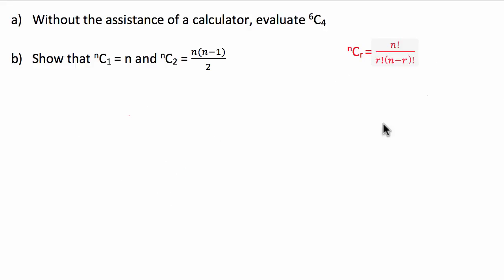G'day guys, we've got an introductory combinations question today that's asking us two things. The first being that without the assistance of a calculator we must evaluate 6 choose 4, and the second part asks us to show that n choose 1 is equal to n and n choose 2 is equal to n times n minus 1 over 2.